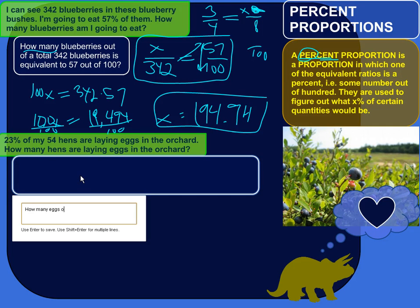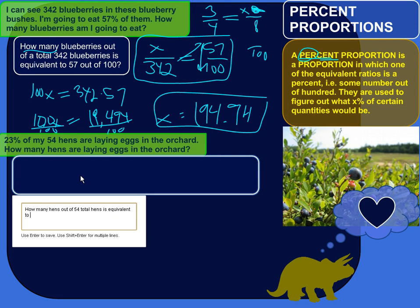how many eggs out of, or how many hens out of 54 total hens is equivalent to 23 out of 100. Out of 100.